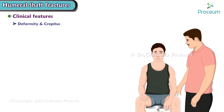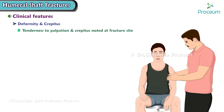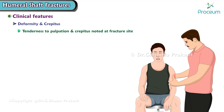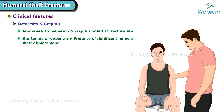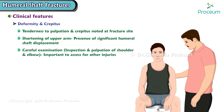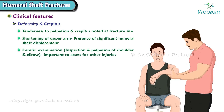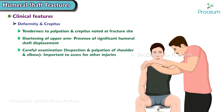There is significant tenderness to palpation, and crepitus may be noted at the fracture site. Shortening of the upper arm suggests significant humeral shaft displacement. Careful examination, including inspection and palpation of the shoulder and elbow, is important to assess for other injuries.